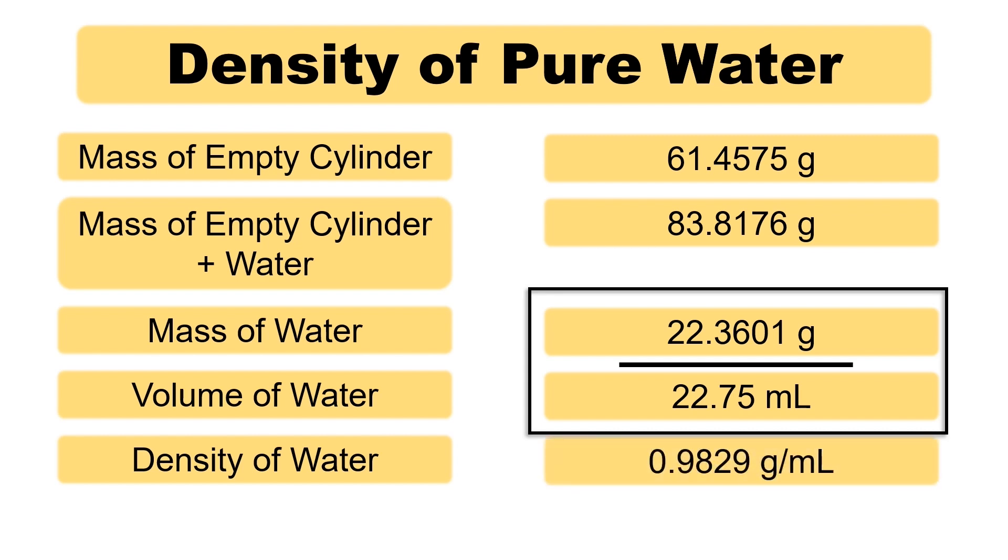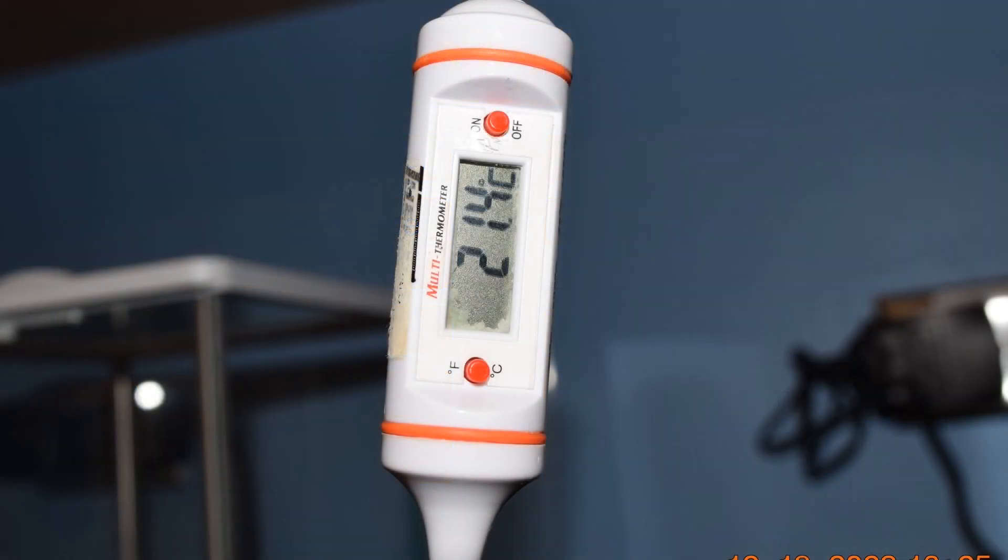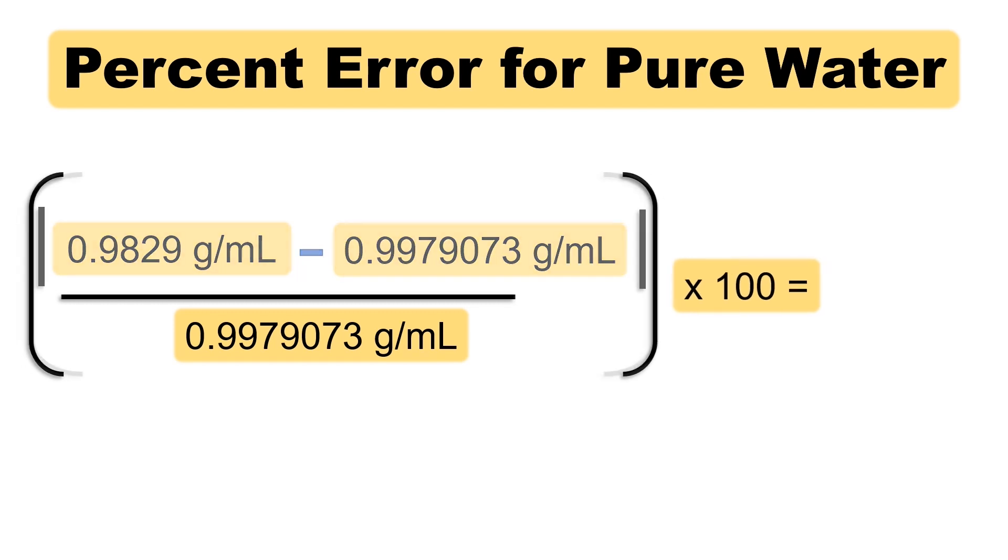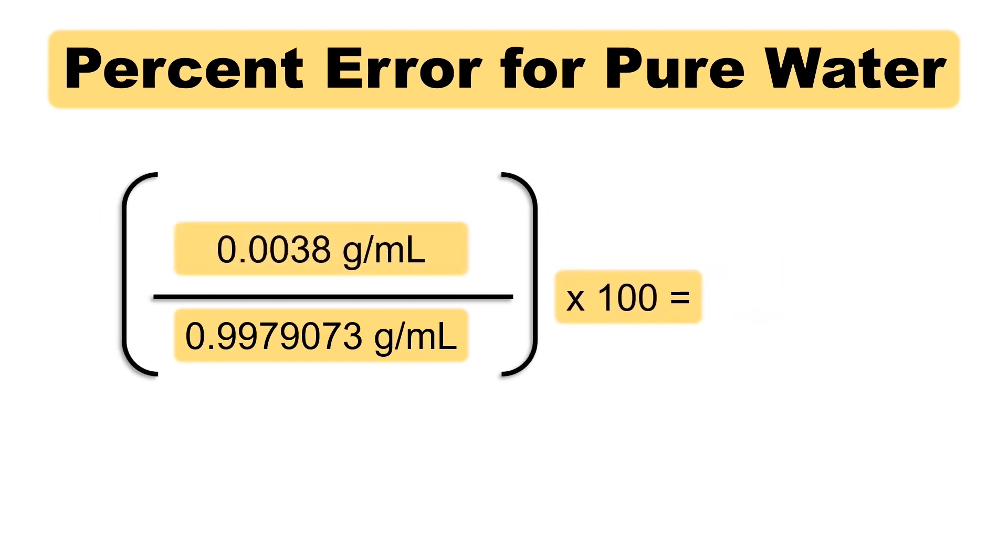Let's find our percent error for pure water. I'll measure the temperature of the pure water because the density is dependent on the temperature. At 21.4 degrees Celsius, water has a density of 0.9979073 grams per milliliter, according to the CRC handbook. Following significant figure rules, we see that the percent error is 0.38%. Yes, less than a 1% error. Using the more precise graduated cylinder improved our measurements.